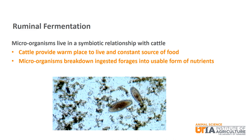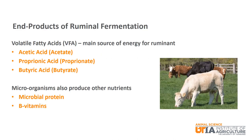Here is a microscopic view of rumen microorganisms. The large brown oblong shapes are one kind of microorganism that is eating and breaking down forages for the animal. The primary end products of this ruminal fermentation are volatile fatty acids, or VFAs. They are the main source of energy for the animal. The three main VFAs are acetic acid or acetate, propionic acid or propionate, and butyric acid or butyrate.